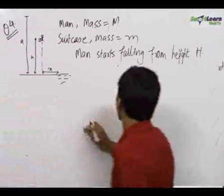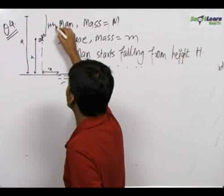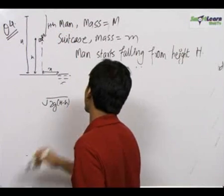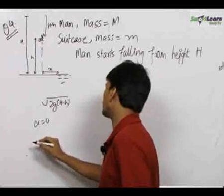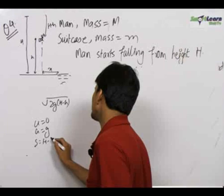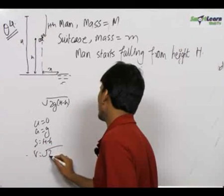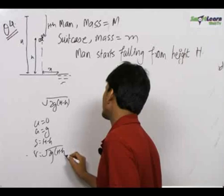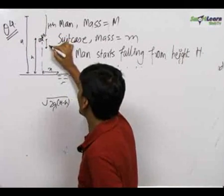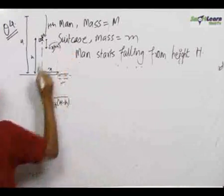For the first part, the man free-falls a height of H minus h, so we can directly write down his velocity as root over 2g(H minus h), because initial velocity was 0, acceleration is equal to g, and displacement is equal to H minus h. Using v² = u² + 2as, we get the final velocity at that point to be root over 2g(H minus h).